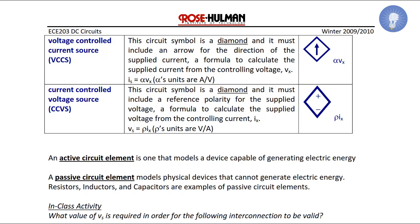Voltage controlled current source or VCCS. This circuit symbol is a diamond and it must include an arrow for the direction of the supplied current. The formula to calculate the supplied current from the controlling variable VX is alpha VX. Alpha has units of amps per volt, or it could be considered transconductance. Current controlled voltage source or CCVS. This circuit symbol is a diamond and must include a reference polarity for the supplied voltage. Its formula is rho IX, where rho has units of volts per amp, which could be considered transresistance.